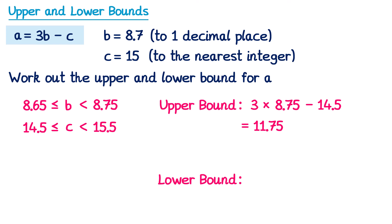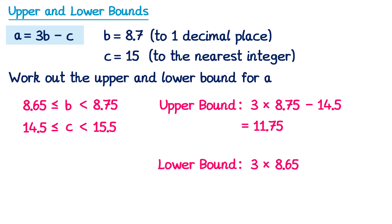For the lower bound of a subtraction, we start with the smallest amount — the lower bound of 3b — which is 3 × 8.65 — and take away as much as possible by using the upper bound of c, which is 15.5. Typing this in gives 10.45. So the upper bound for a is 11.75 and the lower bound is 10.45.